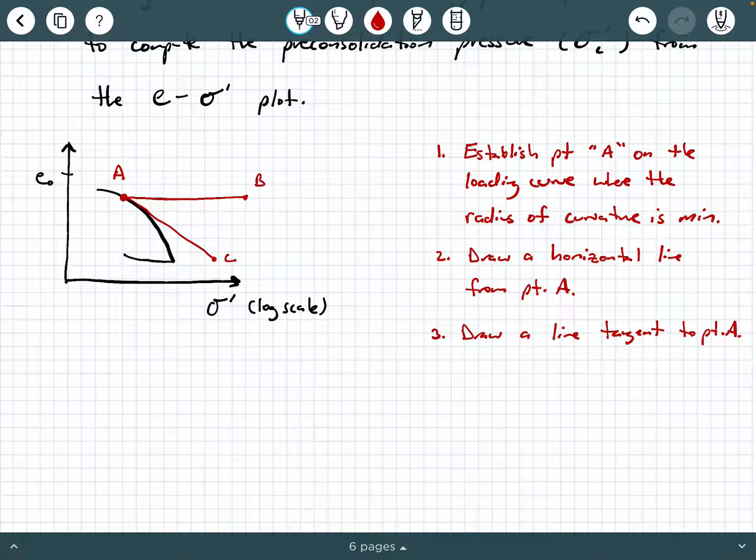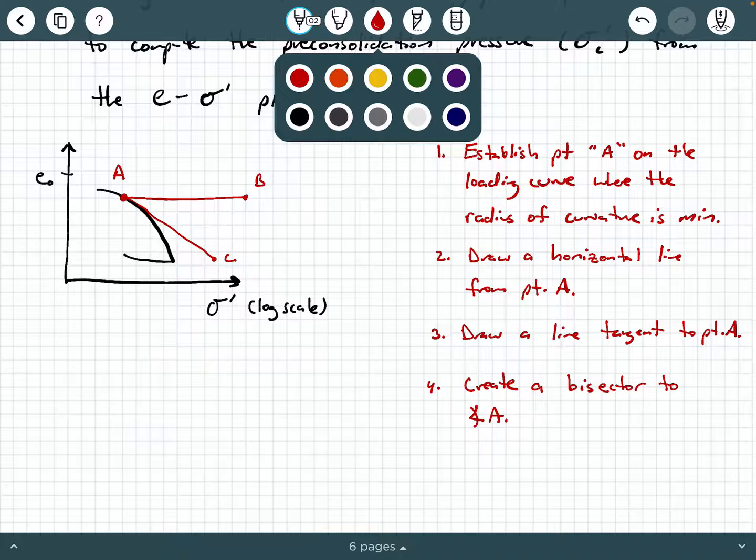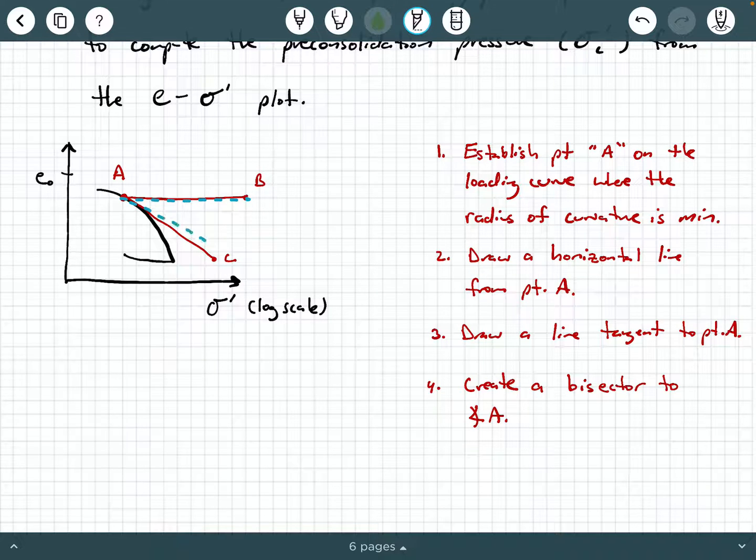The next thing you do in step four is you create a bisector to angle A. So what we do here is this angle that we have now created where A is the vertex, you project a third line back. That is what's called a bisector line. Bisector. And a bisector is just a line that will cut this angle exactly in half. So for example, if we cut this in half, this angle, let's call it theta would be equal to this angle, which is also theta. So if you remember from geometry knowledge, you were just cutting that angle A in half.